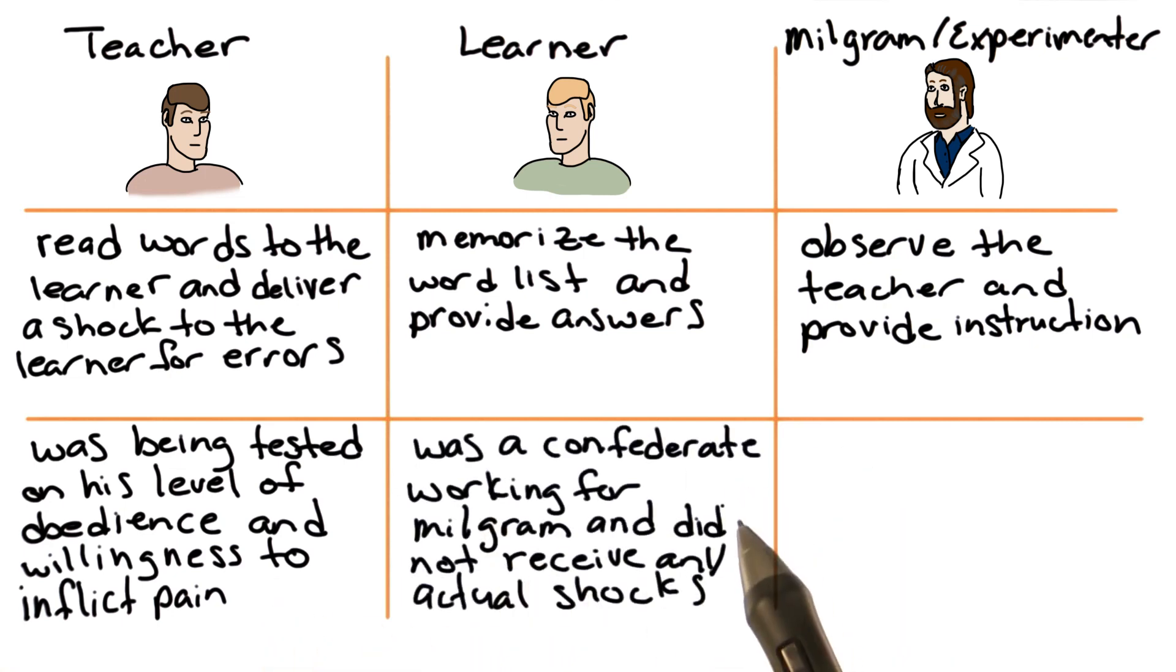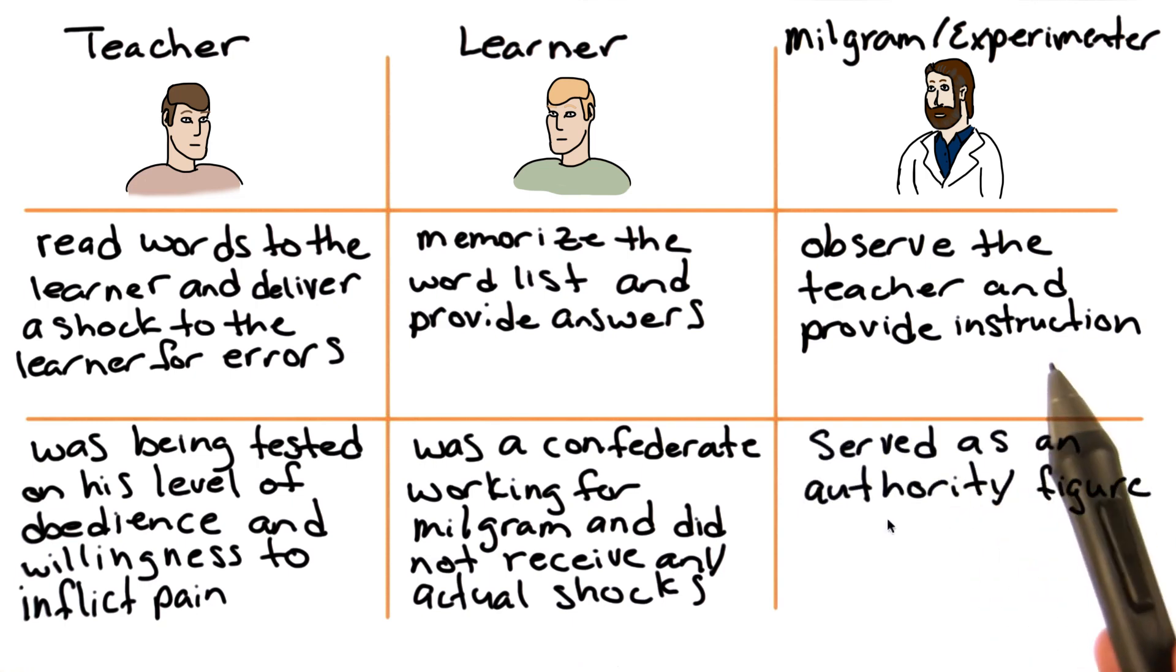Now remember, the learner was a confederate working for Milgram, and he did not receive any actual shocks. And he actually didn't even respond to the word lists. All of the responses were pre-programmed. And finally, Milgram served as the authority figure in this study.